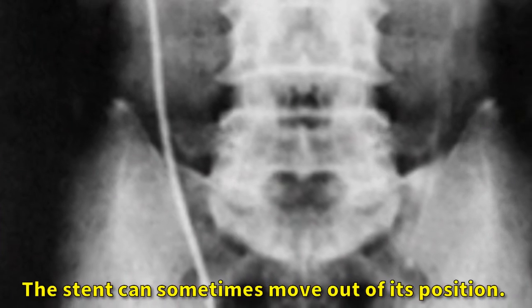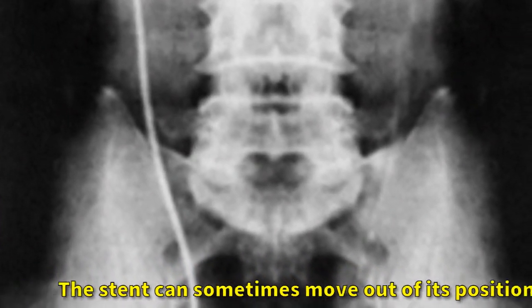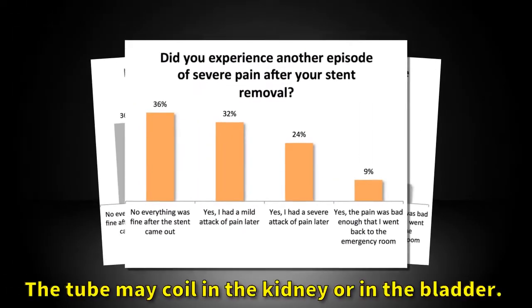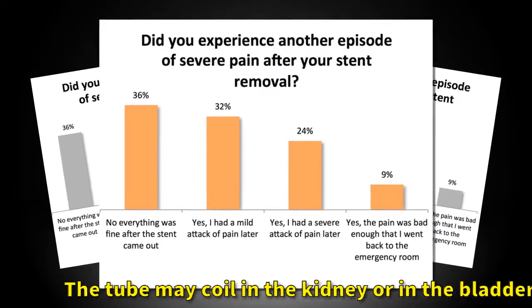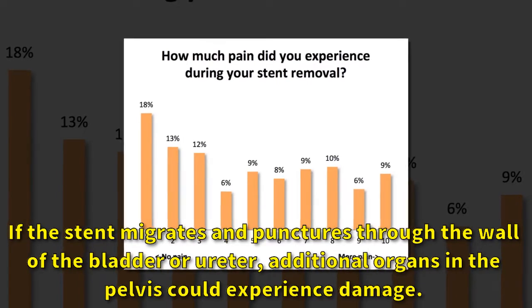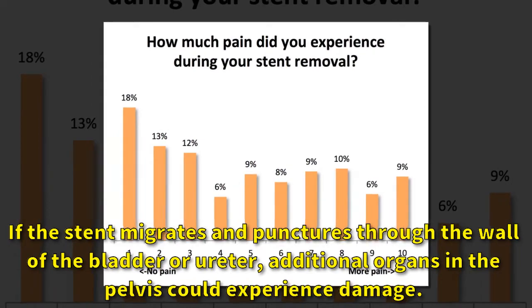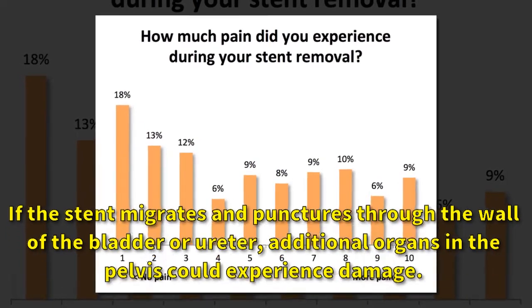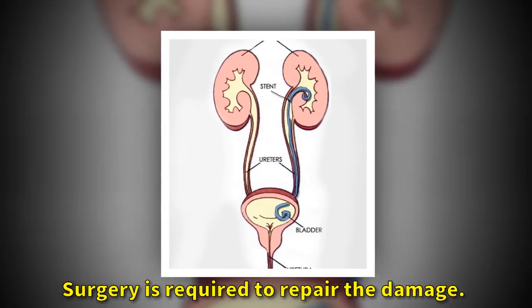Migration. The stent can sometimes move out of its position. The tube may coil in the kidney or in the bladder. If the stent migrates and punctures through the wall of the bladder or ureter, additional organs in the pelvis could experience damage. Surgery is required to repair the damage.